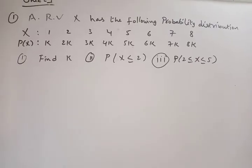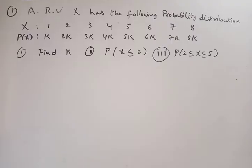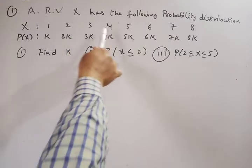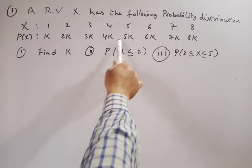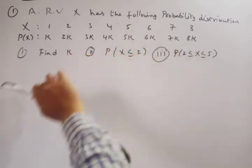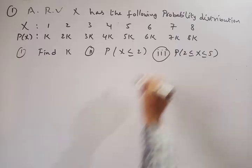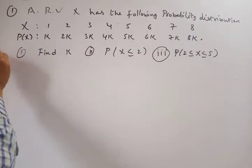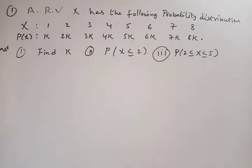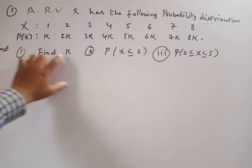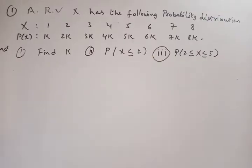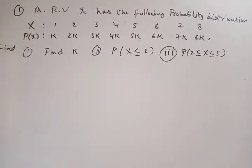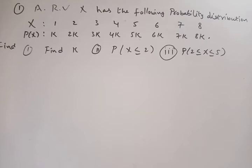See the first problem. A random variable capital X has the following probability distribution. X takes values 1, 2, 3, 4, 5, 6, 7, 8 and their probabilities are k, 2k, 3k, 4k, 5k, 6k, 7k, 8k respectively. The problem asks us to find: first, k; second, P(X ≤ 2); third, P(2 ≤ X ≤ 5).